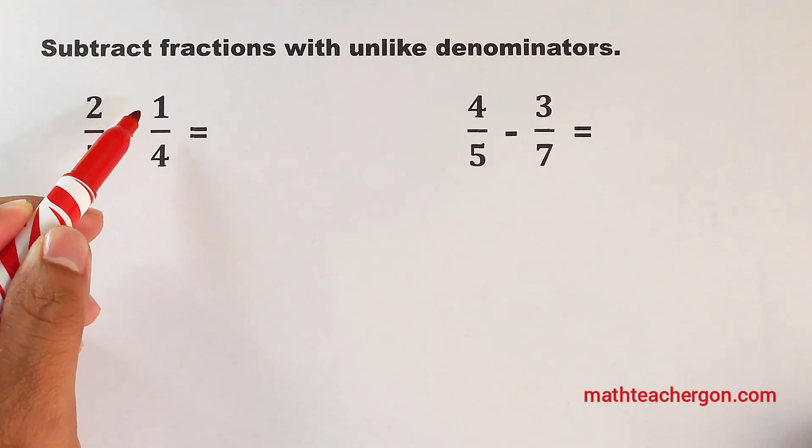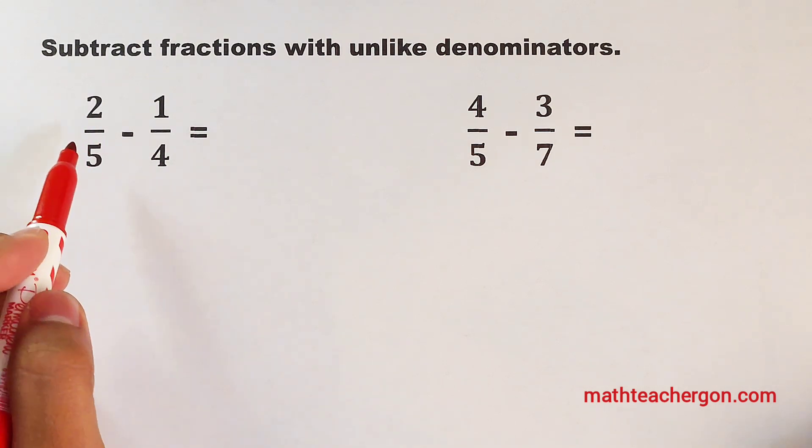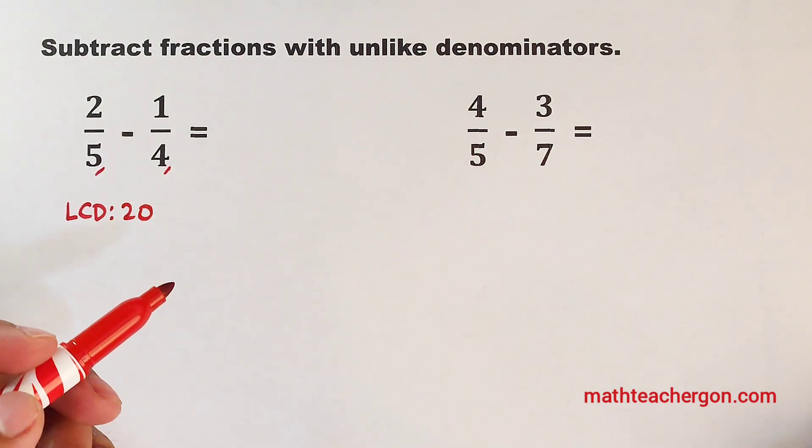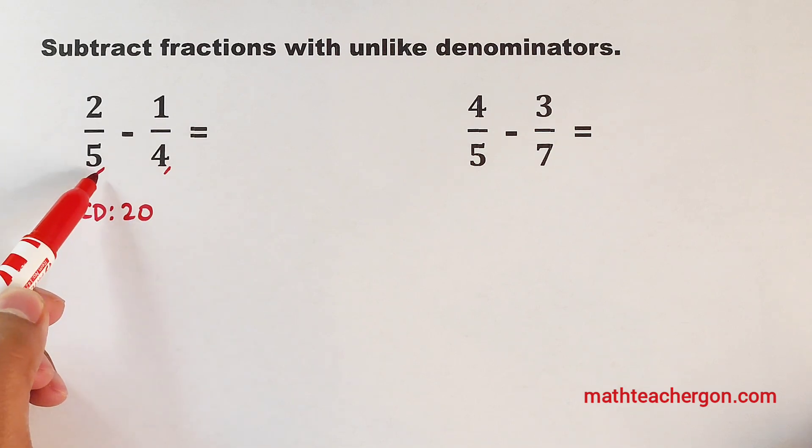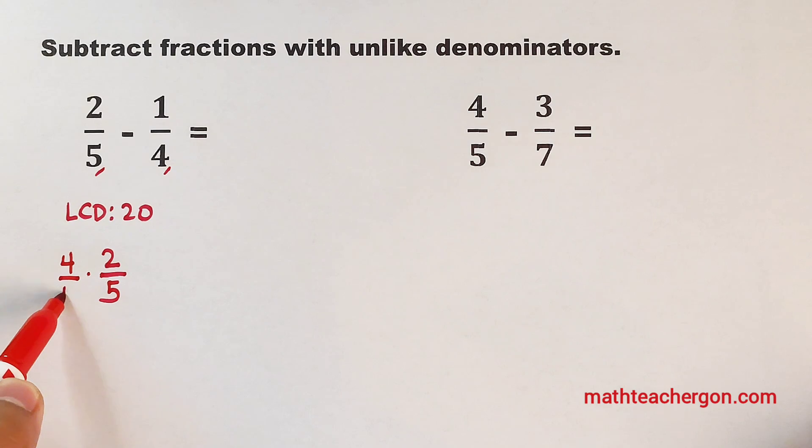We have 2 over 5 minus 1 over 4. Same with adding fractions, what we need to do first is to identify the LCD of these fractions. So between the denominators 5 and 4, the LCD is definitely 20. So what's the next step? We will think of numbers that we need to multiply to 5 to make it 20. So very good, we need to multiply 5 using 4, meaning this 2 over 5 must be multiplied by 4 over 4.